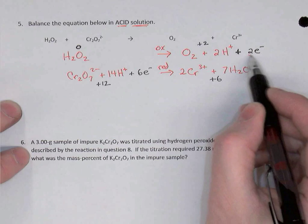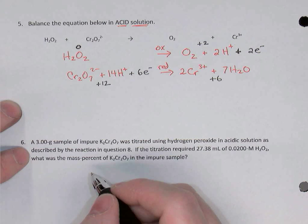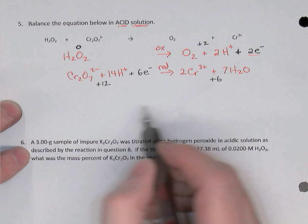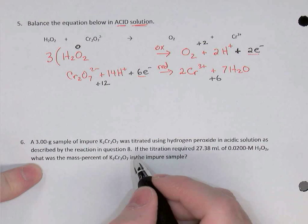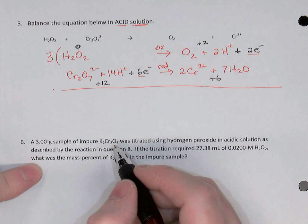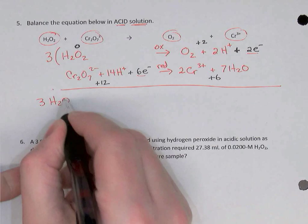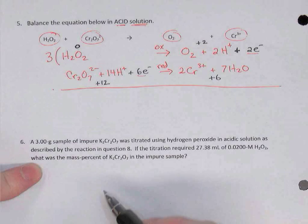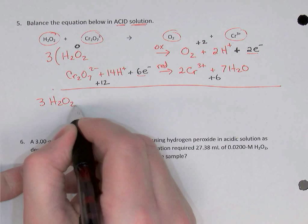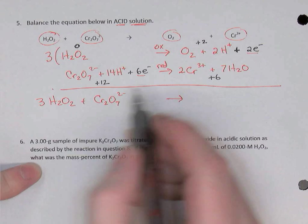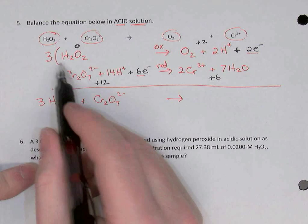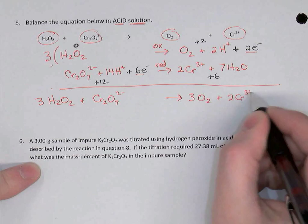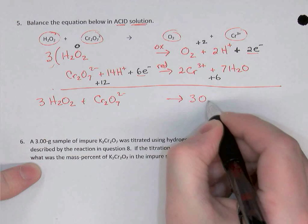The first equation has two electrons and the second has six. We need to make them equal — the lowest common multiple of two and six is six — so multiply the first equation by three to give six electrons. Now recombine the equations, writing reactants and products in the order originally given: three H2O2 reacts with one dichromate, giving three O2 and two chromium-3 plus.